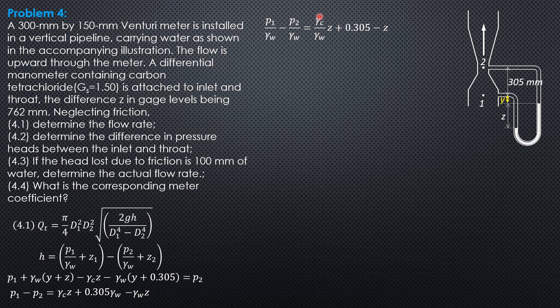So the ratio of specific weight of carbon tetrachloride to that of water is specific gravity of carbon tetrachloride which is 1.5. So replace this by 1.5, replace z by 0.762. So pressure head difference between 1 and 2 is 1.5 times 0.762 minus 0.305 minus 0.762. So that pressure head difference is equal to 0.686 meter of water.